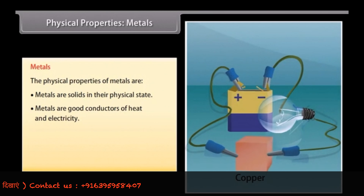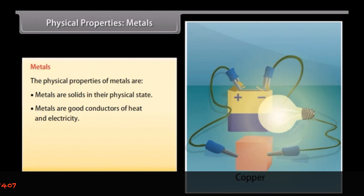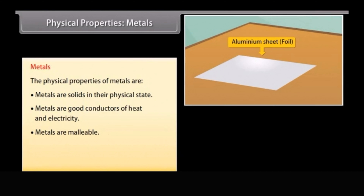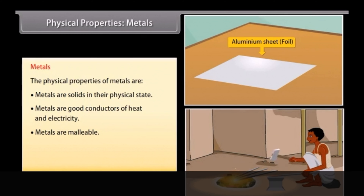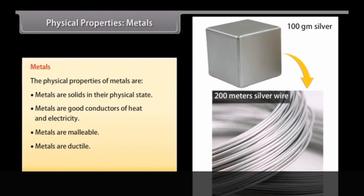Metals are good conductors of heat and electricity, as they have free electrons. Silver and copper are the best conductors of heat and electricity, whereas lead is the poorest conductor of heat. Malleable: metals can withstand hammering and be made into thin sheets known as foils — for example, iron is heated and hammered into different forms, foils, shapes, etc. Ductile: metals can be drawn into wires. For example, 100 grams of silver can be drawn into a thin wire of about 200 meters long.